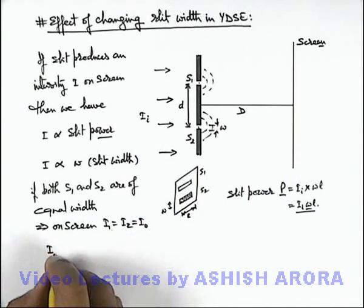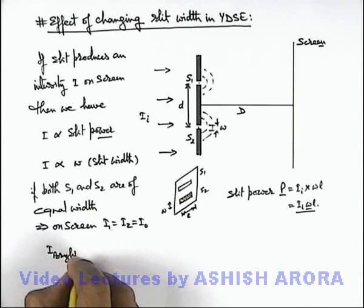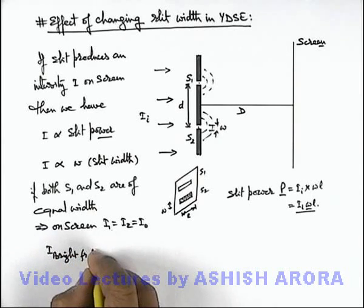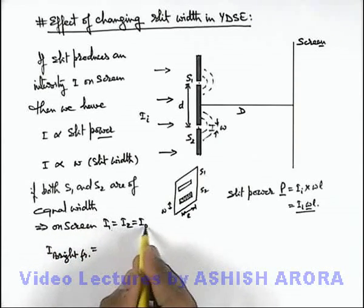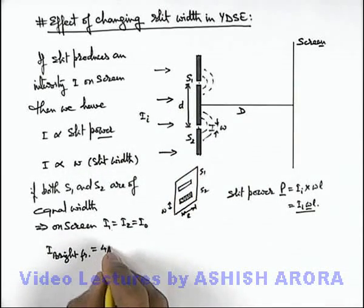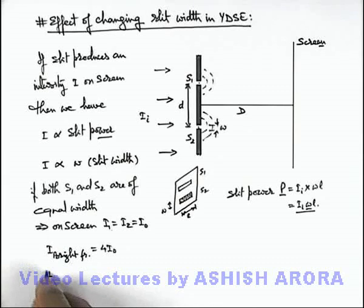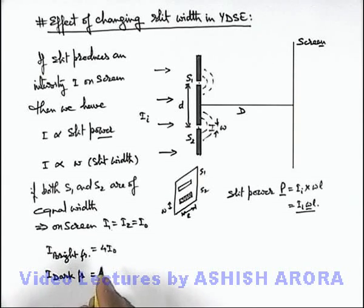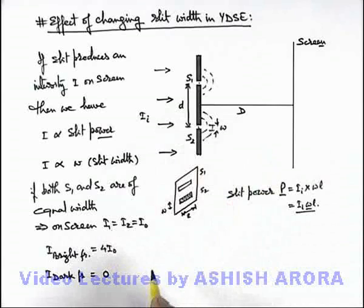We can write intensity of bright fringe on screen will be, if the two equal intensity waves constructively interfere, this will be 4I₀. And if we calculate the intensity of dark fringe, corresponding to destructive interference on screen, it will be zero as the two intensities by the slits on screen are equal.